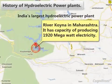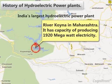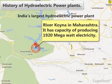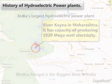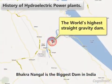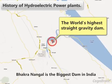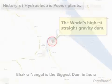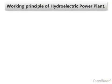India's largest hydroelectric power plant is located across the river Koyna in Maharashtra. It has a capacity of producing 1920 megawatts of electricity. Bhakra Nangal is the biggest dam in India, as well as the world's highest straight gravity dam.